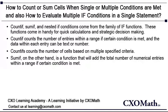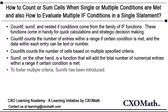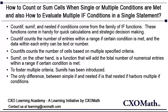SUMIF is a function that will add the total number of numerical entries within a range if a certain condition is met. This means that SUMIF only works with numbers, so if your range includes any text, it will be ignored. Just like COUNTIF, SUMIF facilitates only one condition. To support multiple criteria, SUMIFS has been introduced.